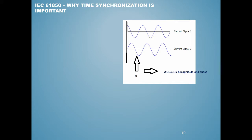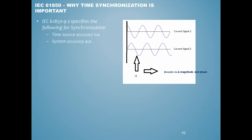That phase delta looks like a fault — if a device is looking at this information and the phases appear off, it could be interpreted as a fault. However, in this situation the quality would most likely go bad, and the device would probably reject it. The specification specifies very tight time source accuracy — an accuracy of four microseconds is required.